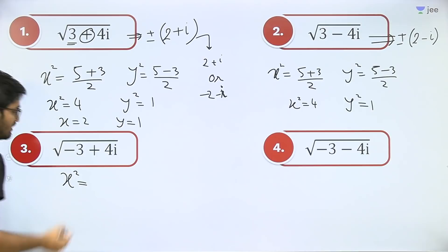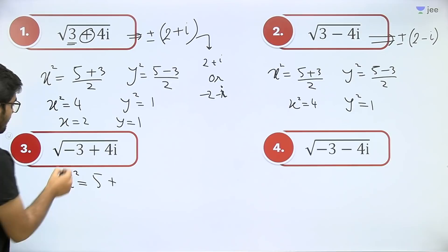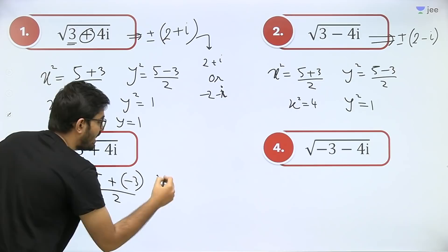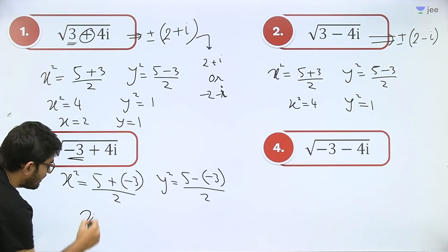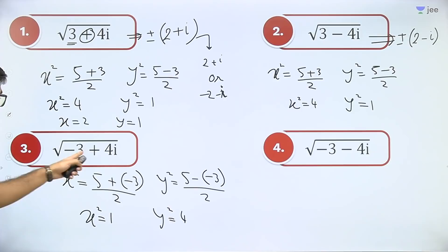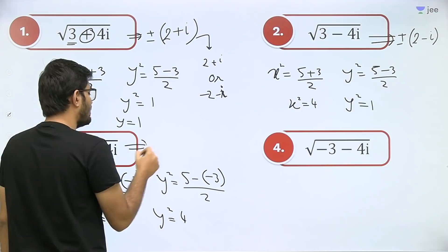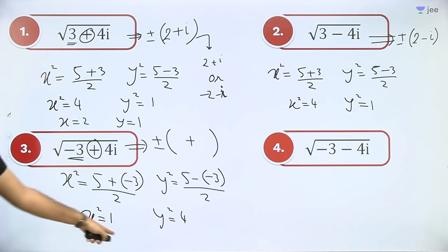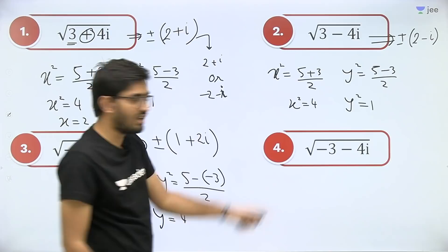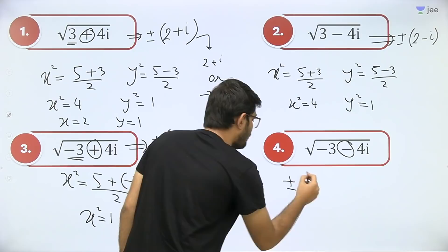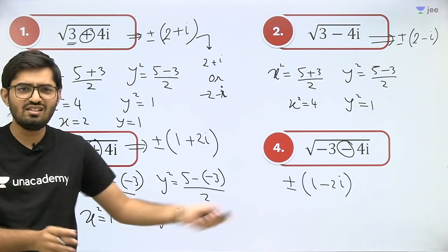Now let's solve this one. Find x² — again mod z is 5. But here the value of a is −3. So x² = (5 + (−3)) / 2 = 1, and y² = (5 − (−3)) / 2 = 4. Now what is the sign in between? Plus. If there's a plus in between, we write plus. So the answer is ±(1 + 2i). And for the related question with minus in between, the answer is ±(1 − 2i).